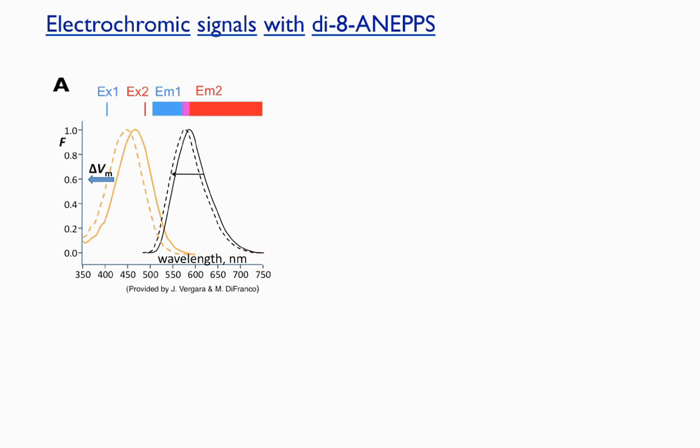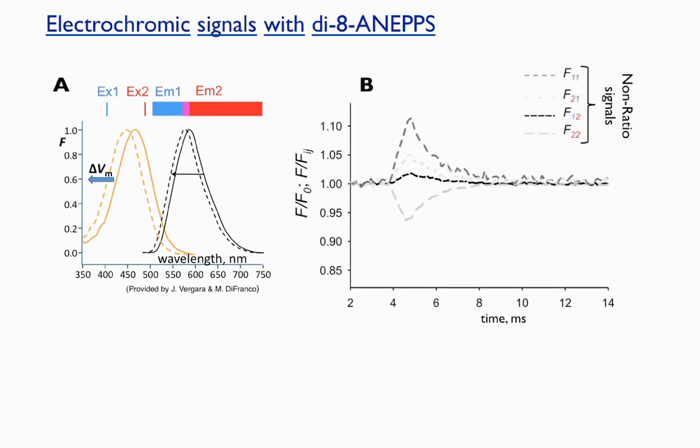An additional factor is a shift in the excitation spectrum, which plots the efficiency of excitation as a function of excitation wavelength. Combining two excitation wavelengths, excitation 1 and excitation 2, with two emission ranges, one obtains four possible signals: F11, F12, F21, and F22, which are plotted here as dashed lines in B.